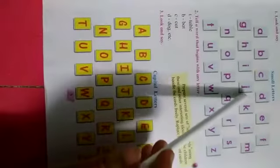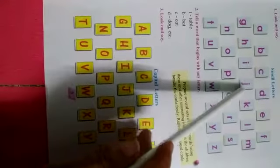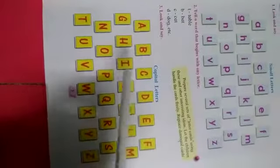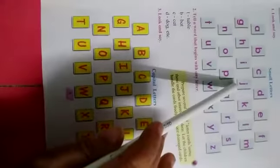So children, these are small letters and these are capital letters. We can also say these are uppercase and these are lowercase alphabet.